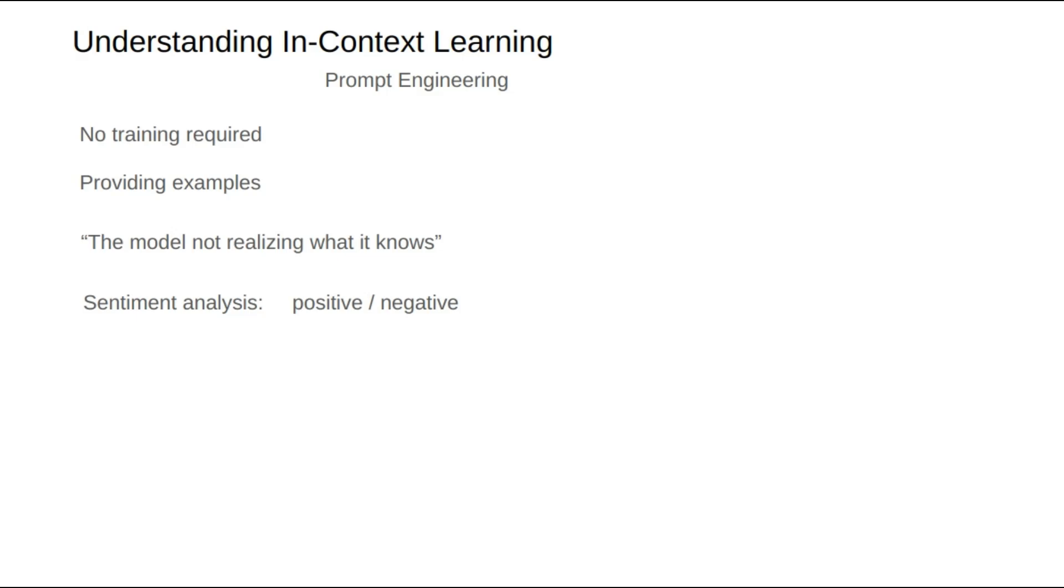The model, while understanding the text well, lacks explicit knowledge of this task. What do we do? We provide a few examples.